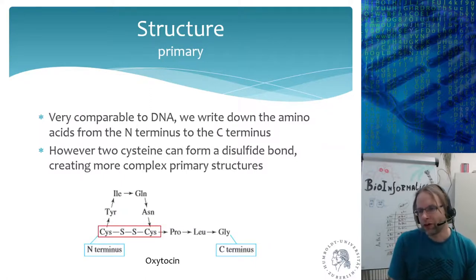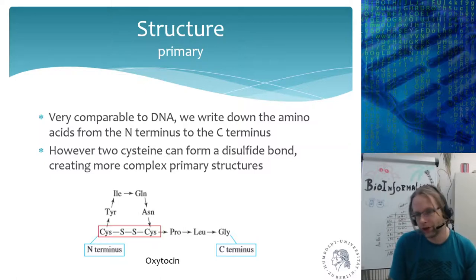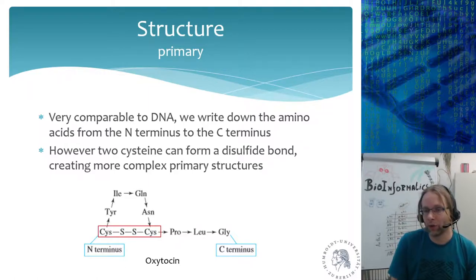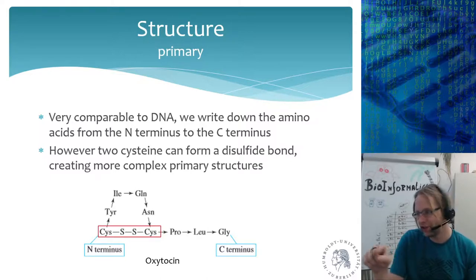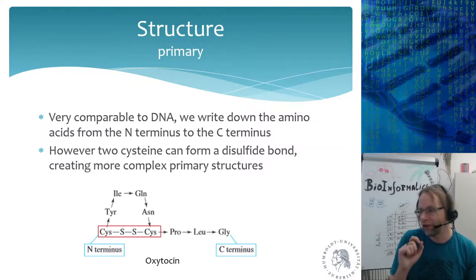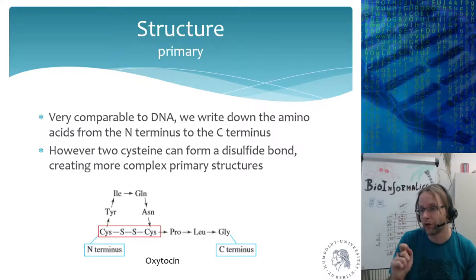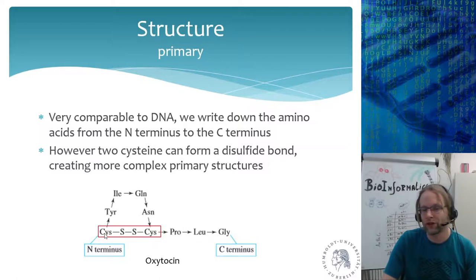The primary structure is very comparable to DNA — we write it from N-terminus to C-terminus. However, if you have cysteines in there it is not a simple linear structure. Unlike DNA where you just write CTAGATCCCGAT, with polypeptides it's not that simple. If you write down the primary structure, the problem is you have cysteines whose sulfur groups couple to other sulfur groups, creating disulfide bonds.